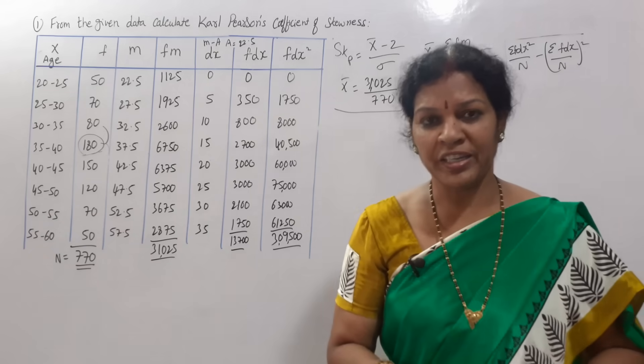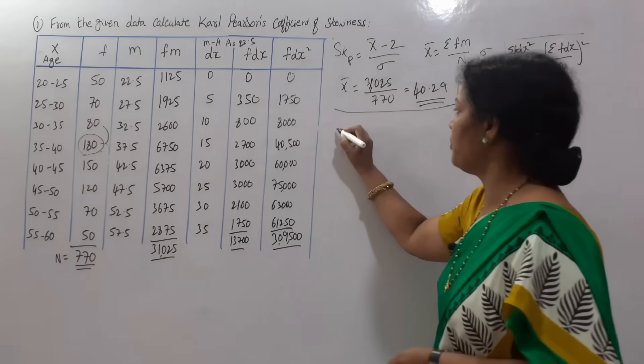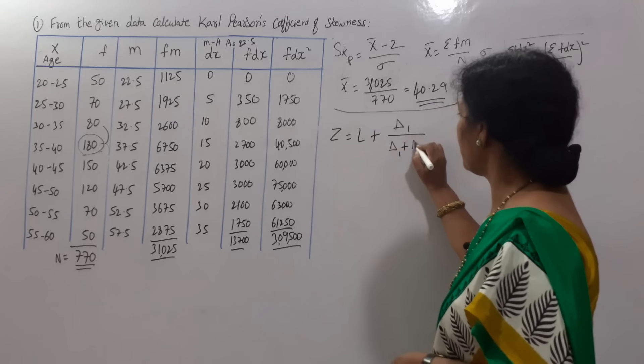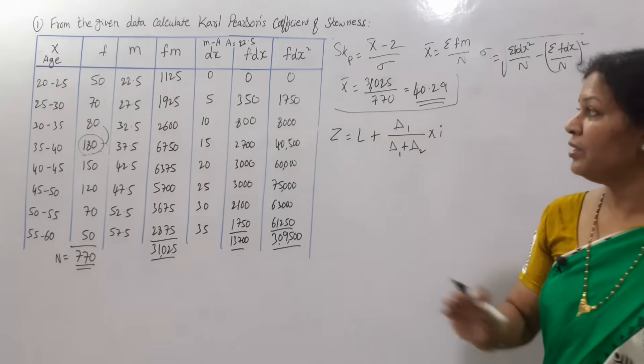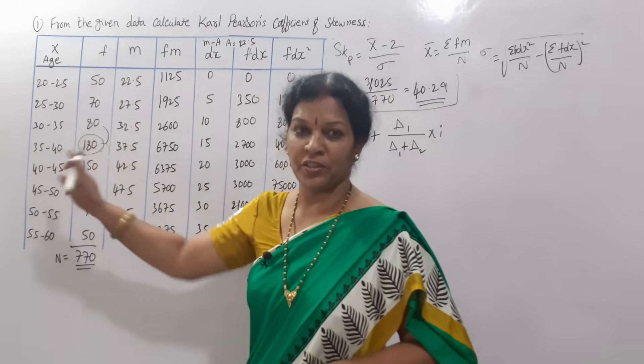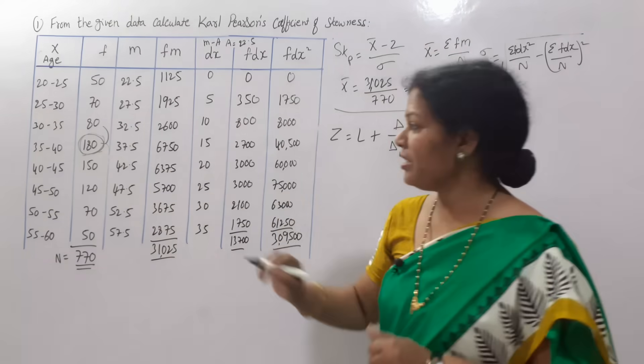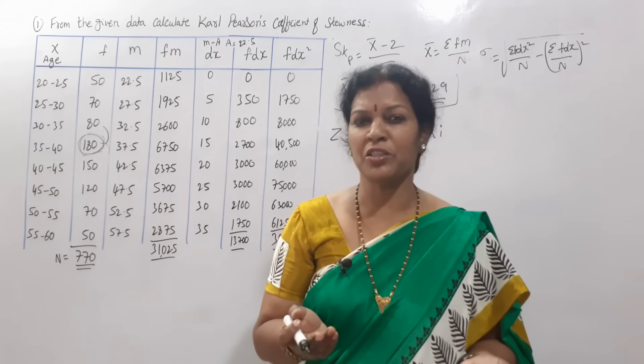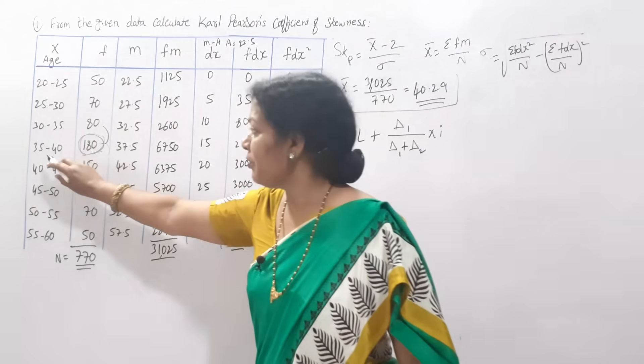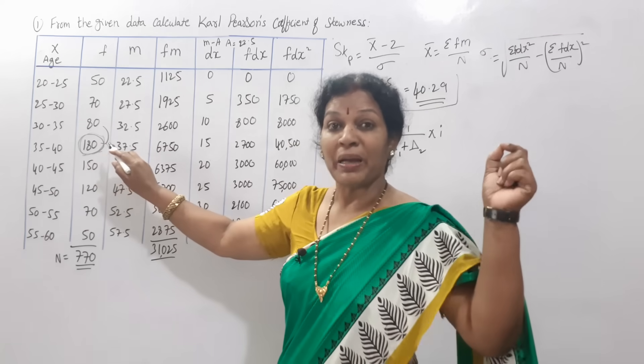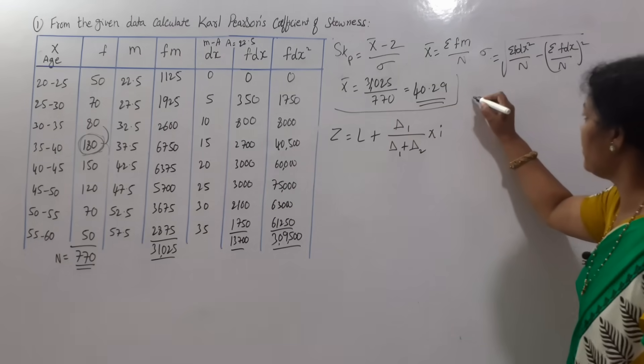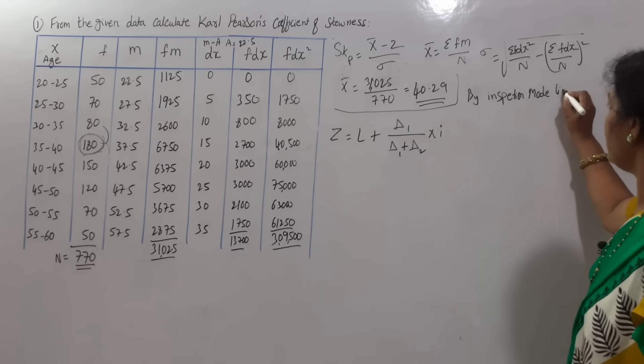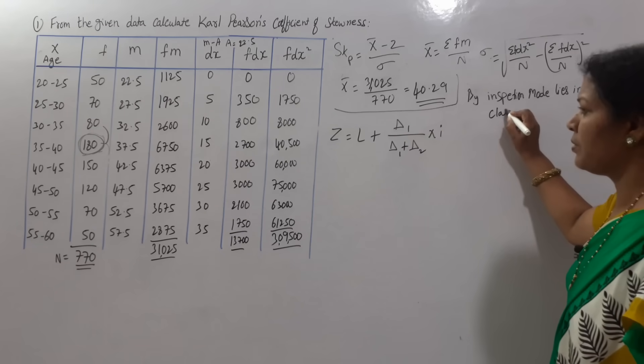Next we will calculate mode. What is the formula for mode? Z equals l plus delta 1 by delta 1 plus delta 2 into i. If you see the frequency, highest number is 180. By inspection you can say mode lies in 35 to 40, because 35 to 40 class interval is occurring maximum number of times, that is 180.